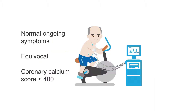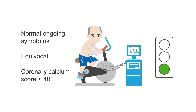Where coronary CTA is appropriate is if a patient has stable ongoing symptoms, has an equivocal stress test, or whether the coronary calcium score is 400 or less and one wishes to evaluate for the presence of significant obstructive disease.